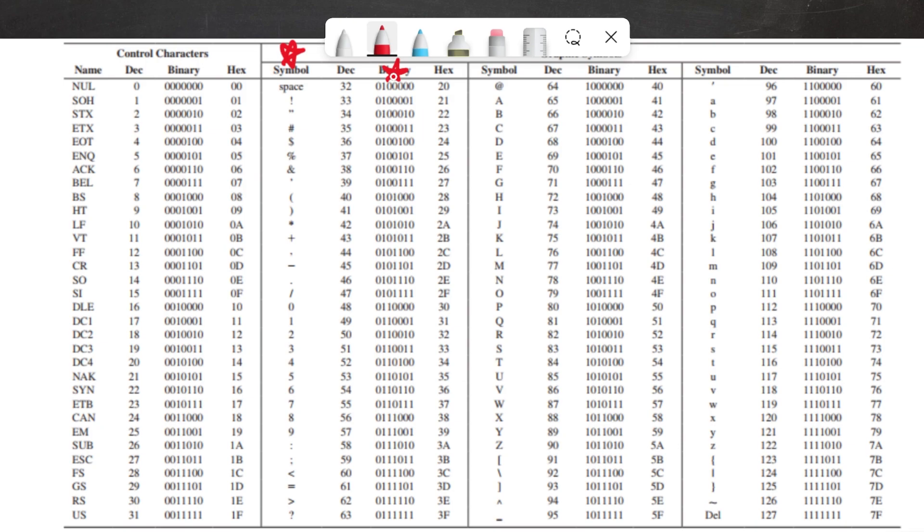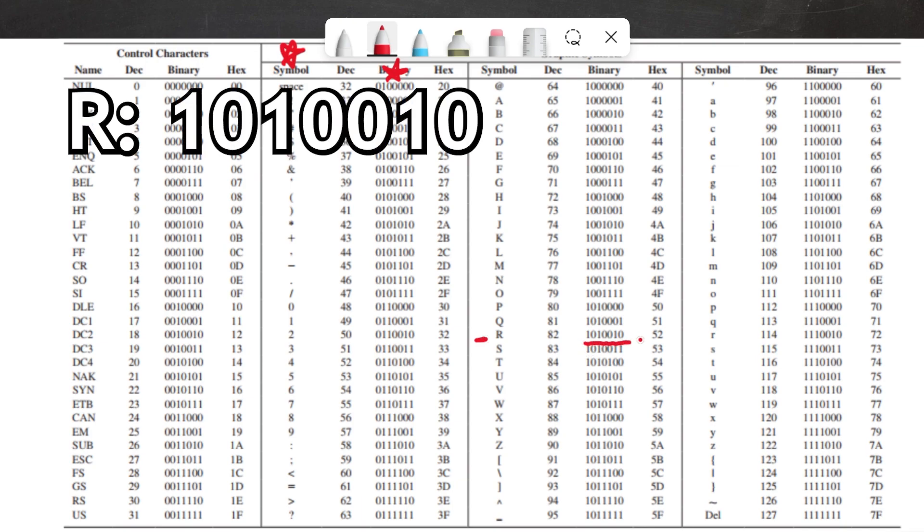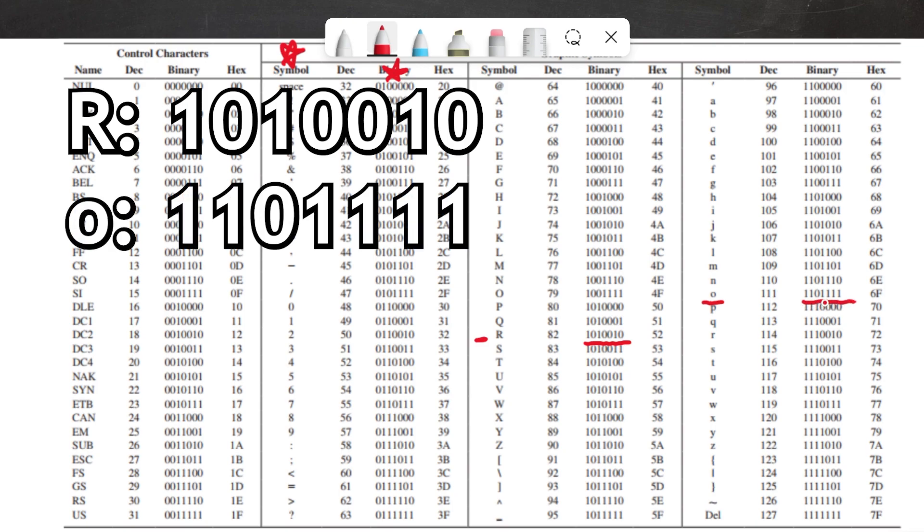Those are really the two important ones for now. So, if I wanted to spell my name, Rob, in binary using ASCII, I would start by finding R and noting that that is 1010010. Now, I want the second letter of my name to be lowercase, so I will find that the ASCII number for O, lowercase, is 111, which translates to 1101111.